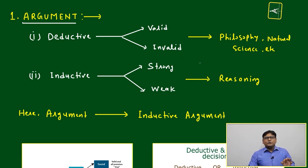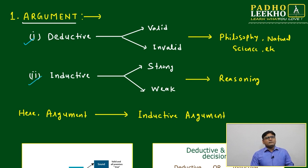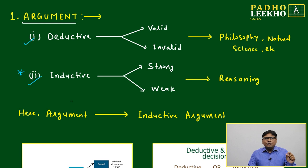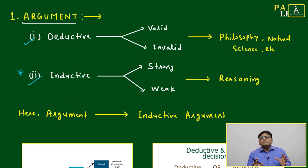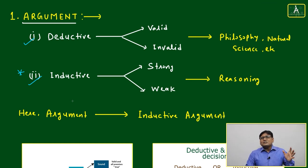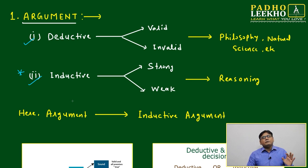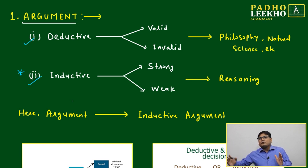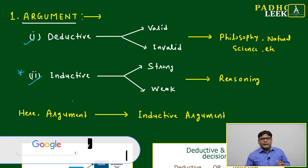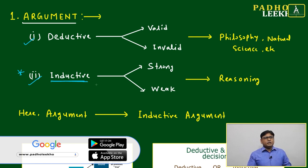Basically, argument will be deductive and inductive. We have to focus on inductive. Whatever statement is given in your argument, we will assume it is correct — we will not check the truthfulness of the argument. That is called inductive. If you want to check the truthfulness, that leads toward philosophy. For example, 'leaves of the trees are green' — we will assume it is green. If it is given as red, we will assume it is red. Based on that, we determine if the argument is strong or weak. We are following inductive argument, not deductive.